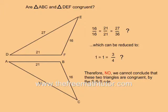When I reduce the fractions, two of them reduce to exactly one, but the other reduces to three quarters. These three sets of sides are not exactly equal. Therefore, no, we cannot conclude that these two triangles are congruent by the SSS rule.